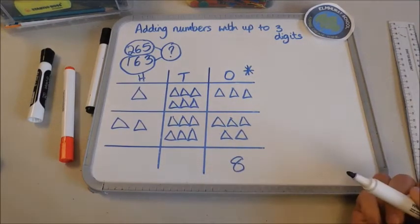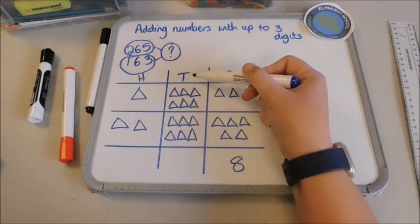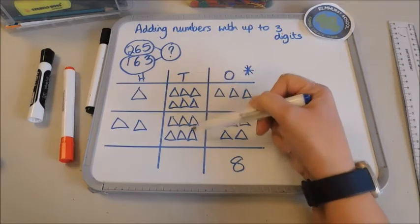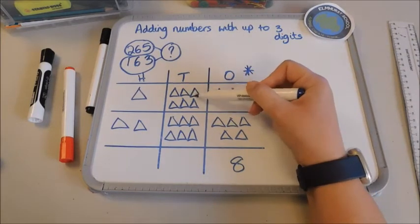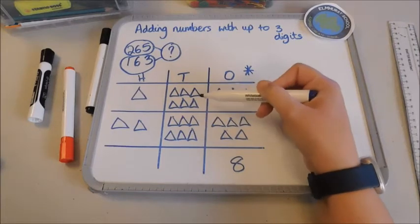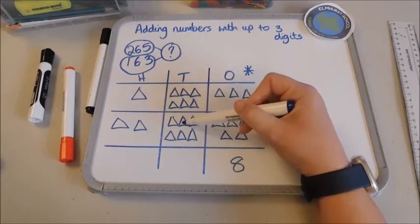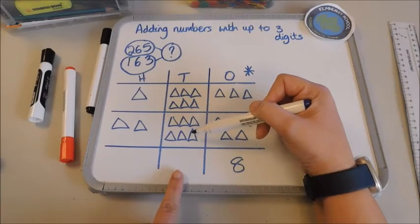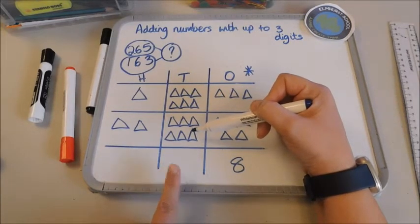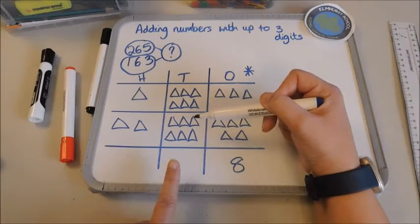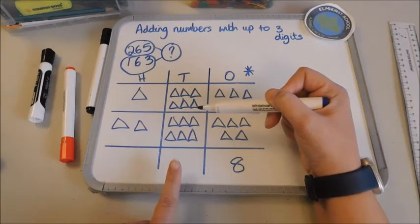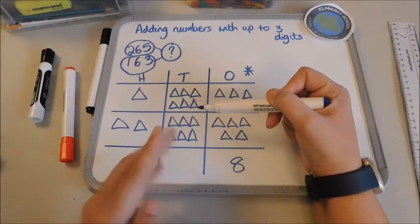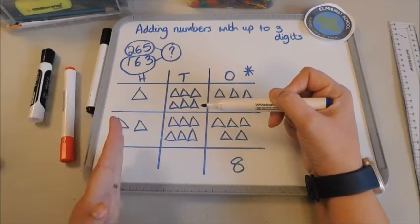I can put eight down. Now I'm going to move on to my next column, I'm going to add these up. So I've got six in here one two three four five six, add this six, six seven eight nine ten eleven twelve. Now I can't have two digits in one column. I can have nine but I can't have twelve.